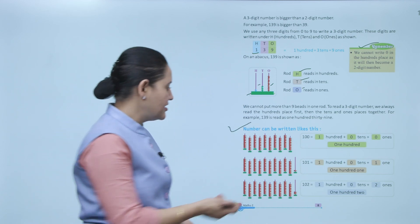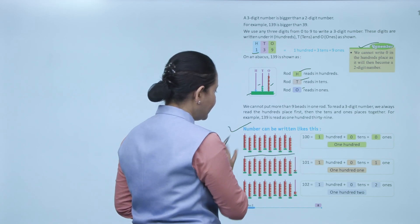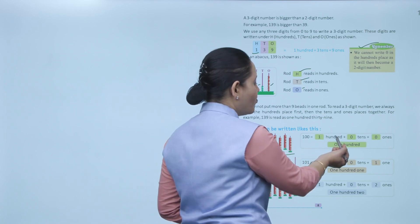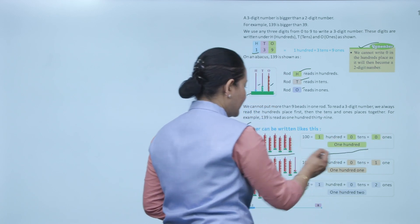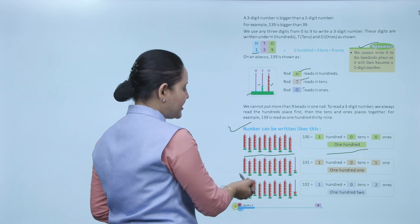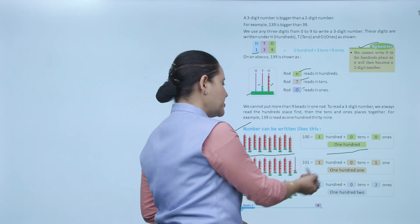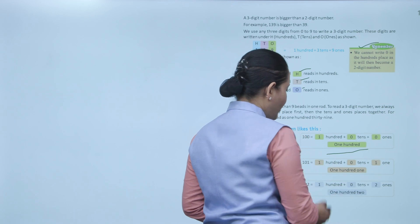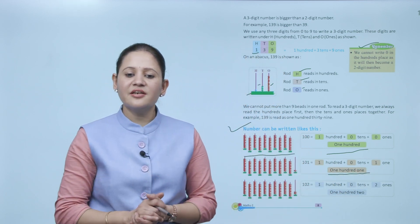So for 100: ten spikes, each having ten beads, that is 100 plus zero tens plus zero ones, which equals 100. For 101: ten spikes with ten beads and one spike with one bead, so the number is 101 — one at the hundreds position, zero at tens, and one at ones. Like this, we will write the numbers.